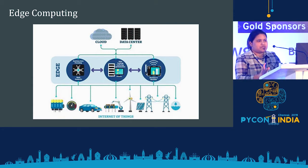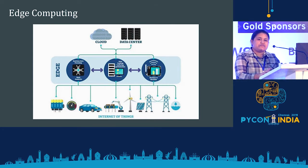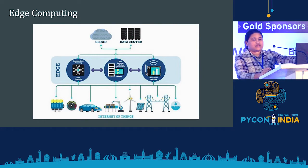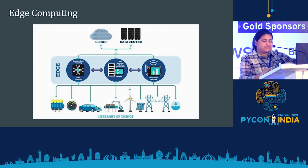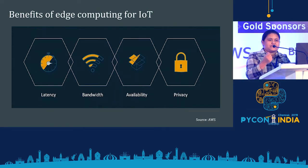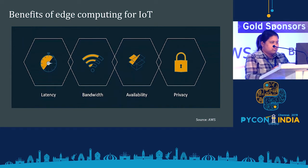Edge computing is computing closer to the device, or basically on the device itself if possible. If you look at the architecture, at the very base of the Internet of Things we have the devices, and those devices are connected to embedded CPUs. Edge computing enables those low-power CPUs to perform processes that would otherwise be done on the cloud. Beyond edge computing, we have cloud computing.